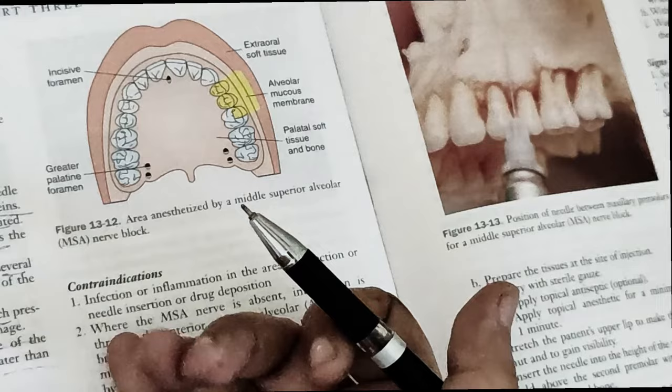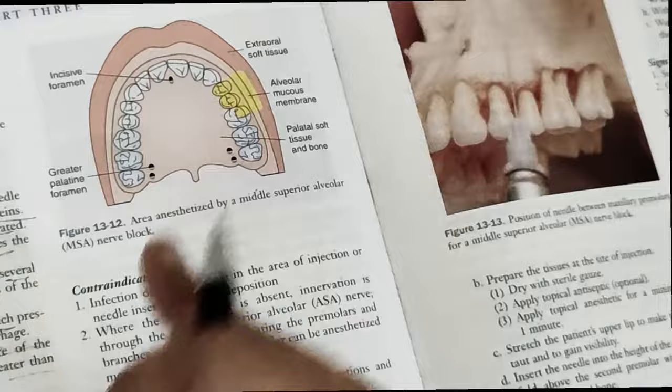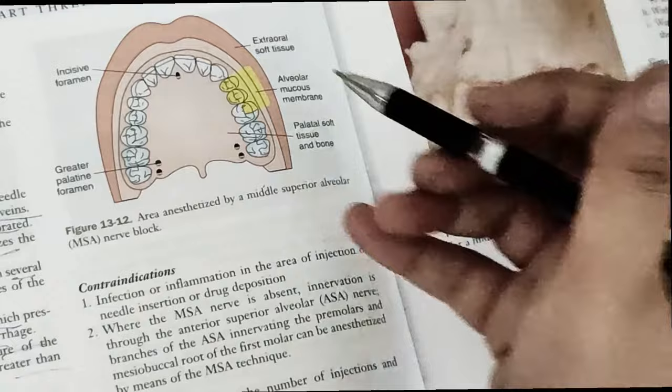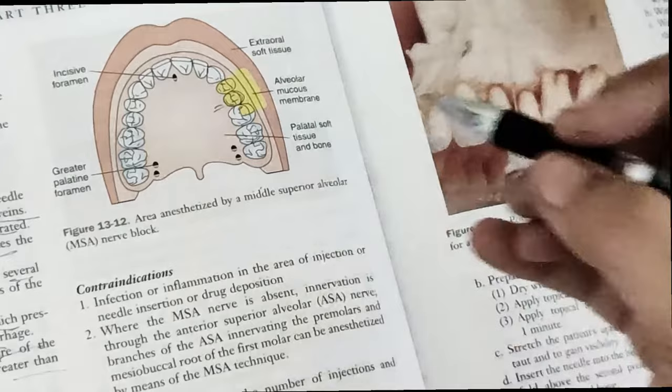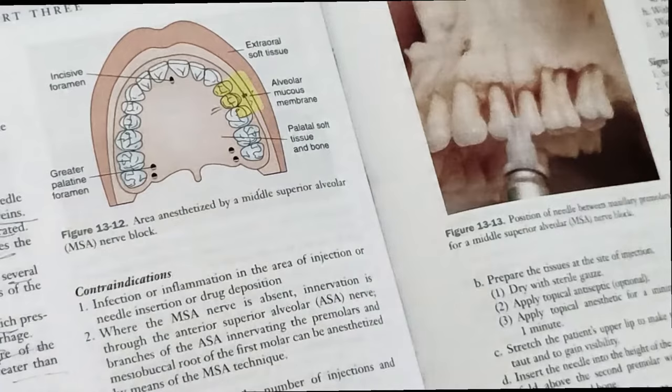All these anesthesias — PSA and MSA — are for the buccal side. For palatal, we will use other anesthesia. We are talking about the buccal periosteal tissues here. In MSA, we are aiming for the apex of the maxillary second premolar. The nerve block landmark: it is given in the mucobuccal fold over the maxillary second premolar area.